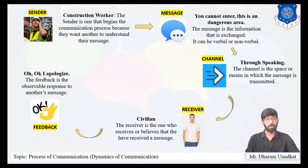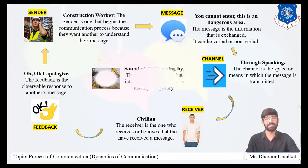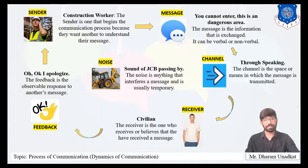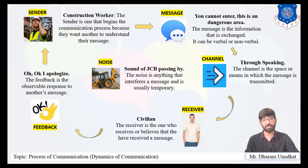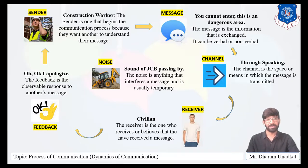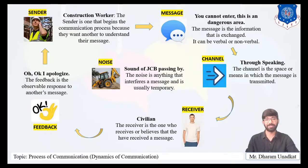Here the receiver says 'Okay, I apologize.' The feedback is an observable response to another's message. The last element in the process of communication is noise. Noise reduces the effectiveness of communication — here the noise is due to a JCB or other construction machinery. Noise is anything that interferes with a message and is usually temporary.